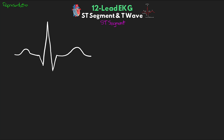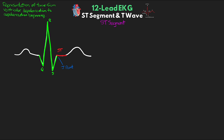Our ST segment is really a representation of the time from when the ventricles finish depolarizing and before they start repolarizing. If we look at our waveforms on EKG, we measure our ST segment starting from the end of our QRS complex — this is at something we call the J point. The ST segment then goes on and ends at the start of our T wave. It's common for either the J point or the start of the T wave to not be perfectly defined, and therefore we often have to make an approximation of these points.